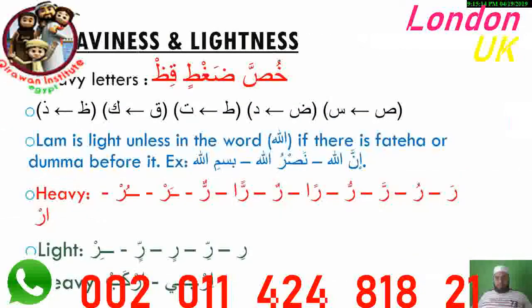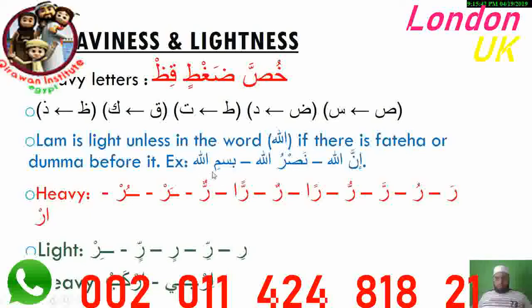The heaviness and lightness rule is very important — as we said, 80% of anybody's mistakes come from this rule. The heavy letters are Khusabaghtin Qidh. We have some details for Lam and Ra. Lam is always light except for the word Allah if there is Damma or Fatha before it, like 'Inna Allah' and 'Nasr Allah.' But if there is Kasra before the word Allah, you do it light. Apart from this detail, Lam is always light.